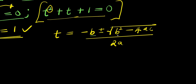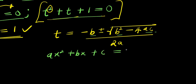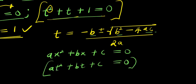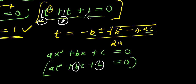Now we are going to find out the values of a, b, and c using this equation. To achieve that, let's consider the general quadratic equation: ax squared plus bx plus c equals 0, or in terms of t: at squared plus bt plus c equals 0. Now, the value of a is the coefficient of t squared, which is 1. b is the coefficient of t, which is 1. c is the constant term, which is 1.